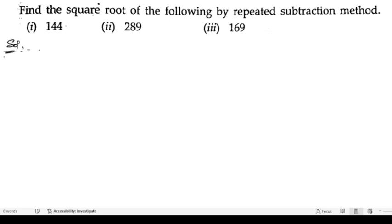First we will write what we are having. We have 144. So we already know that how to do the repeated subtraction, that is by subtracting the odd numbers. So what we have to do is subtract the odd numbers from the given number.